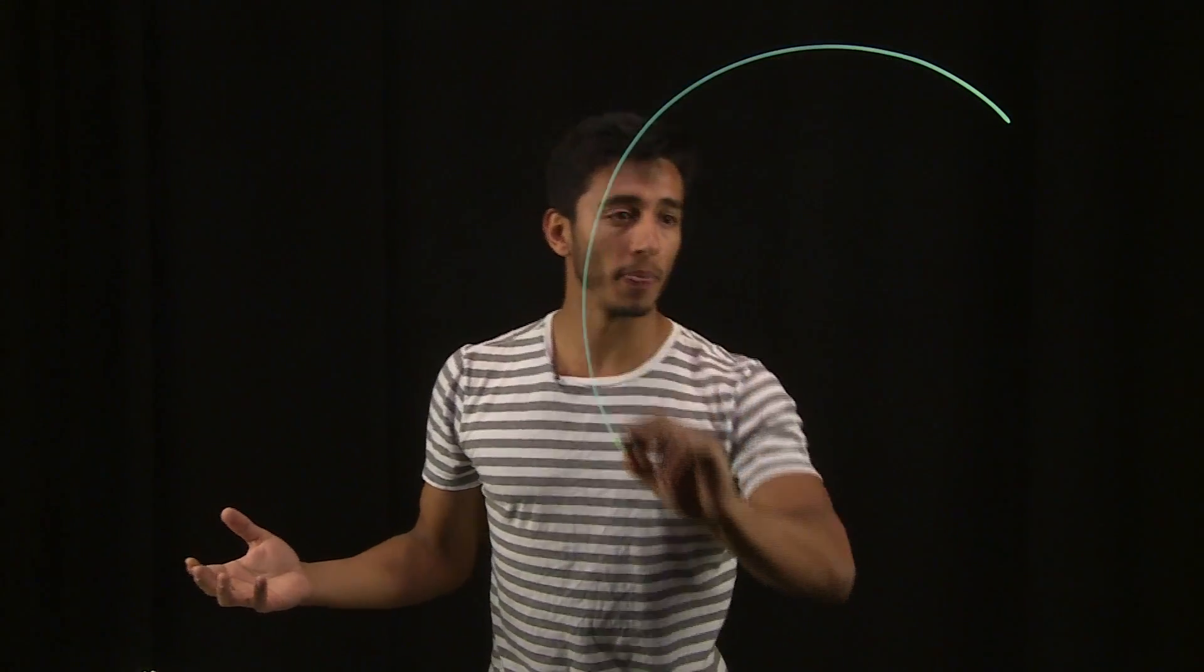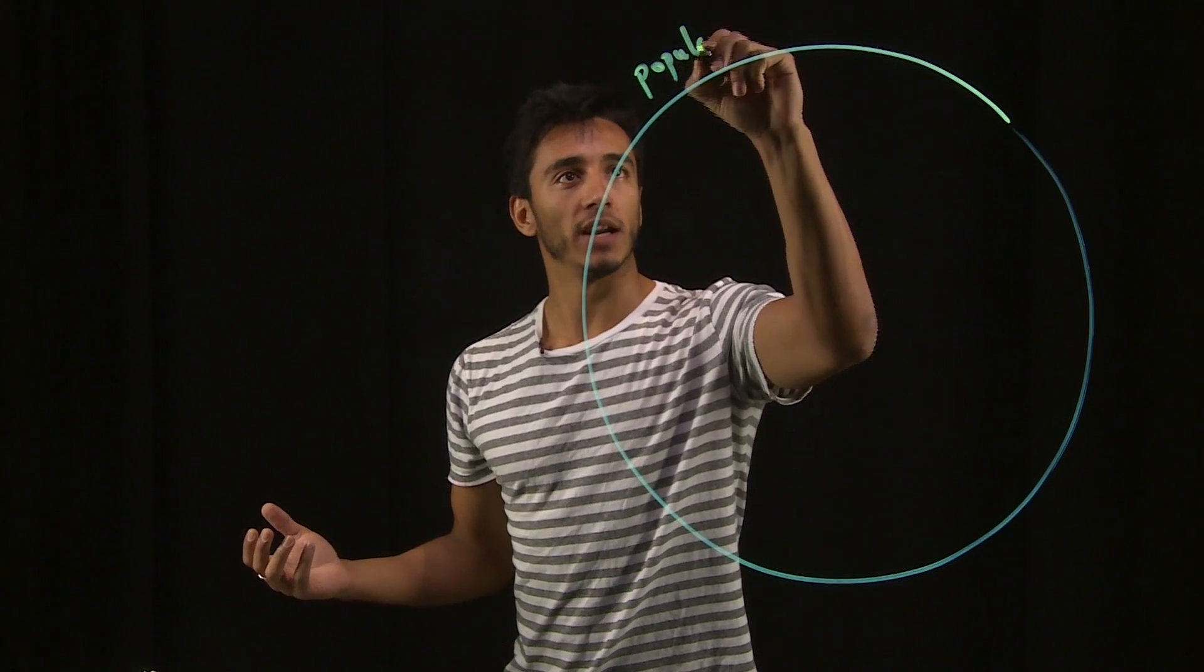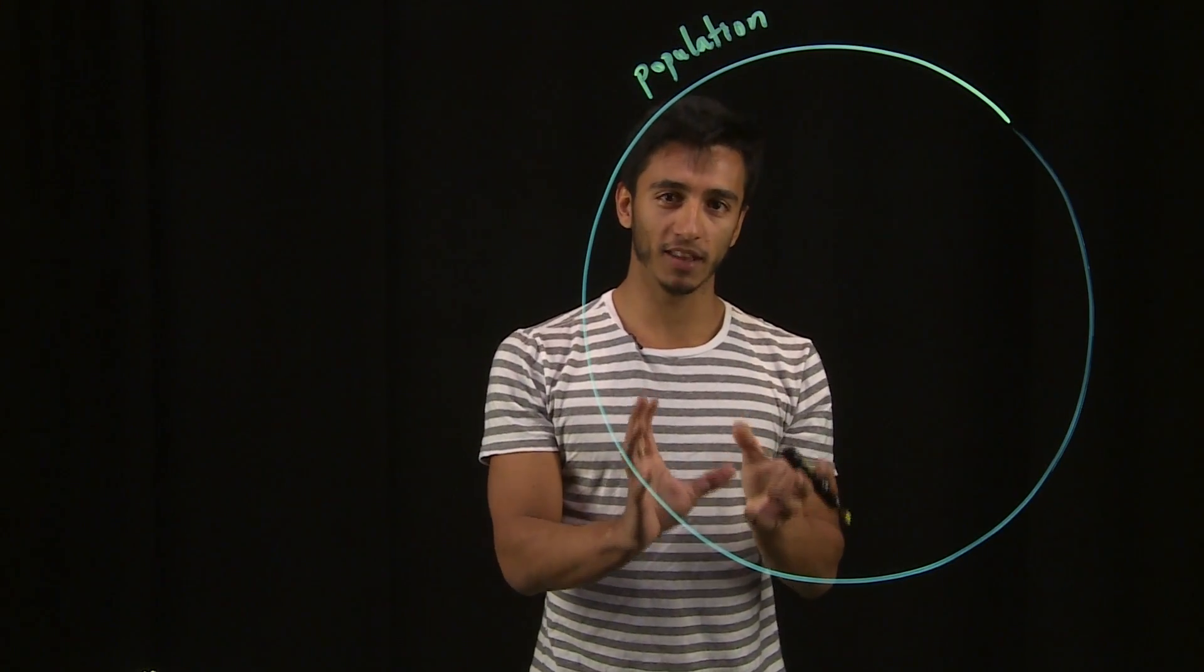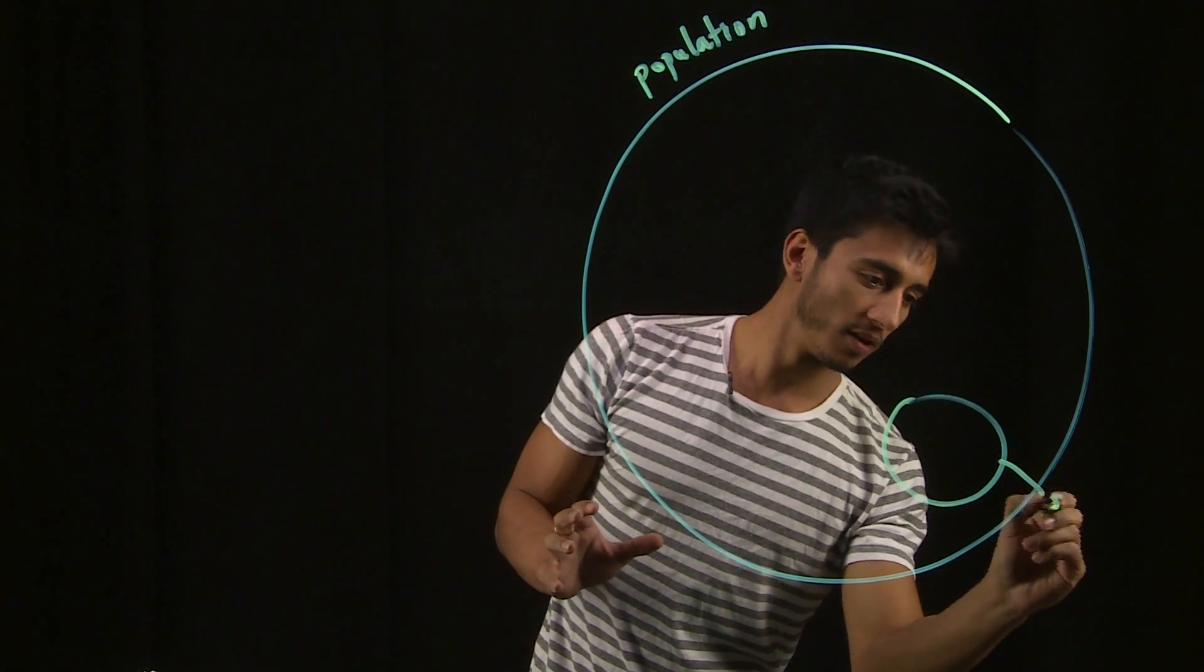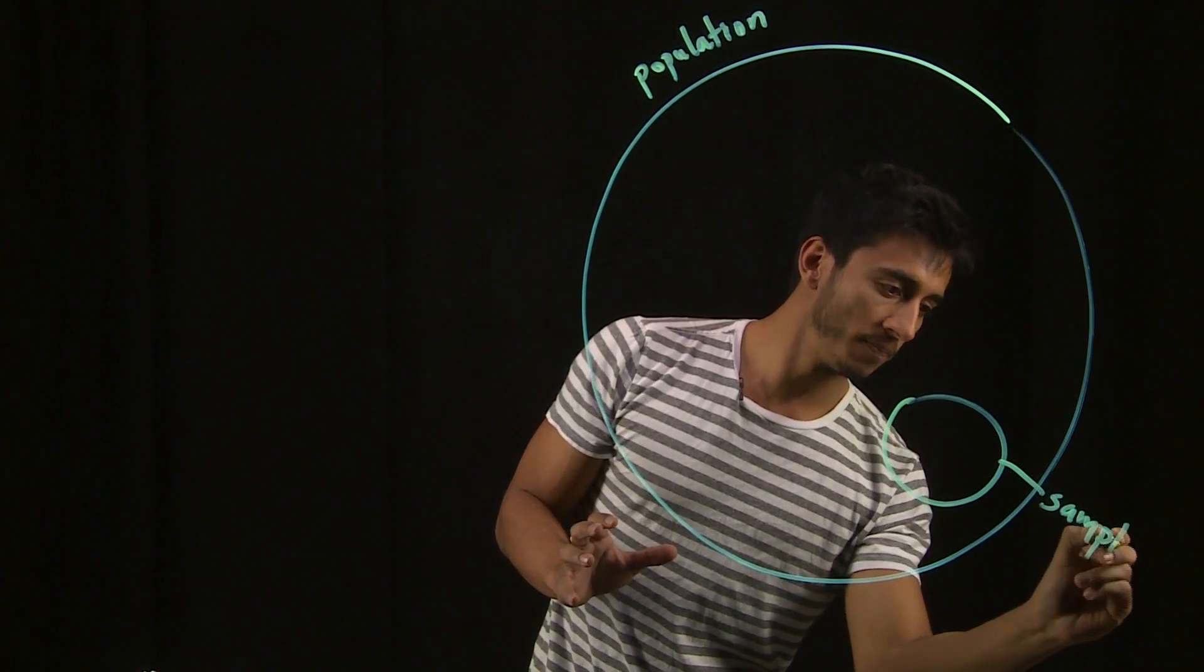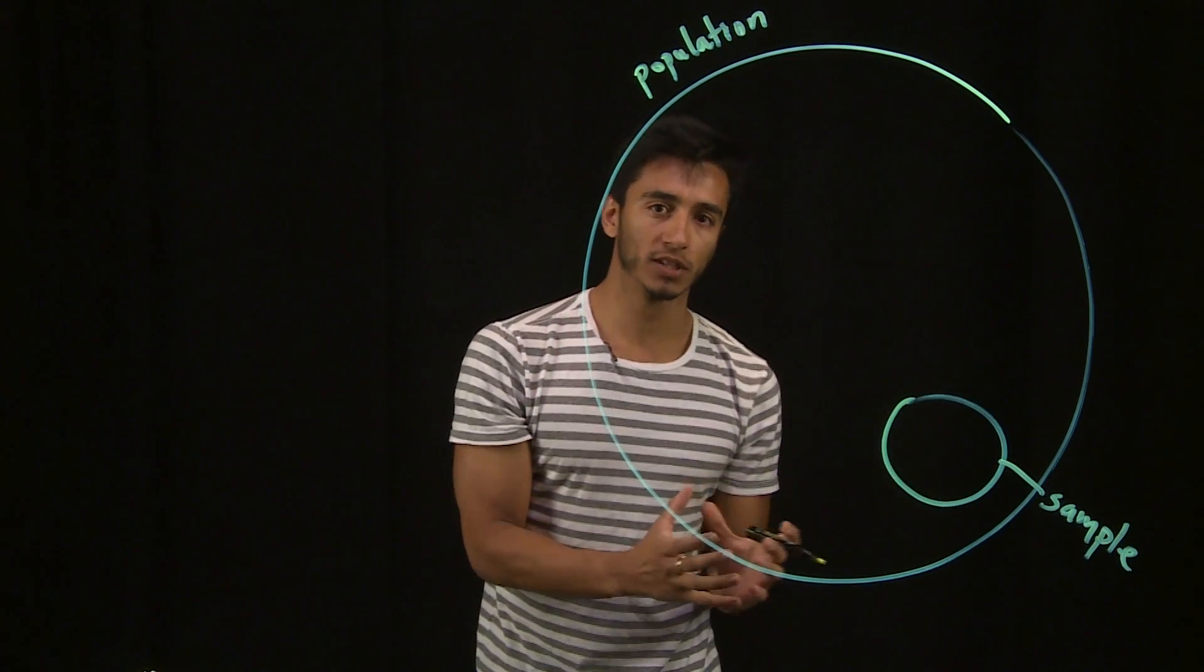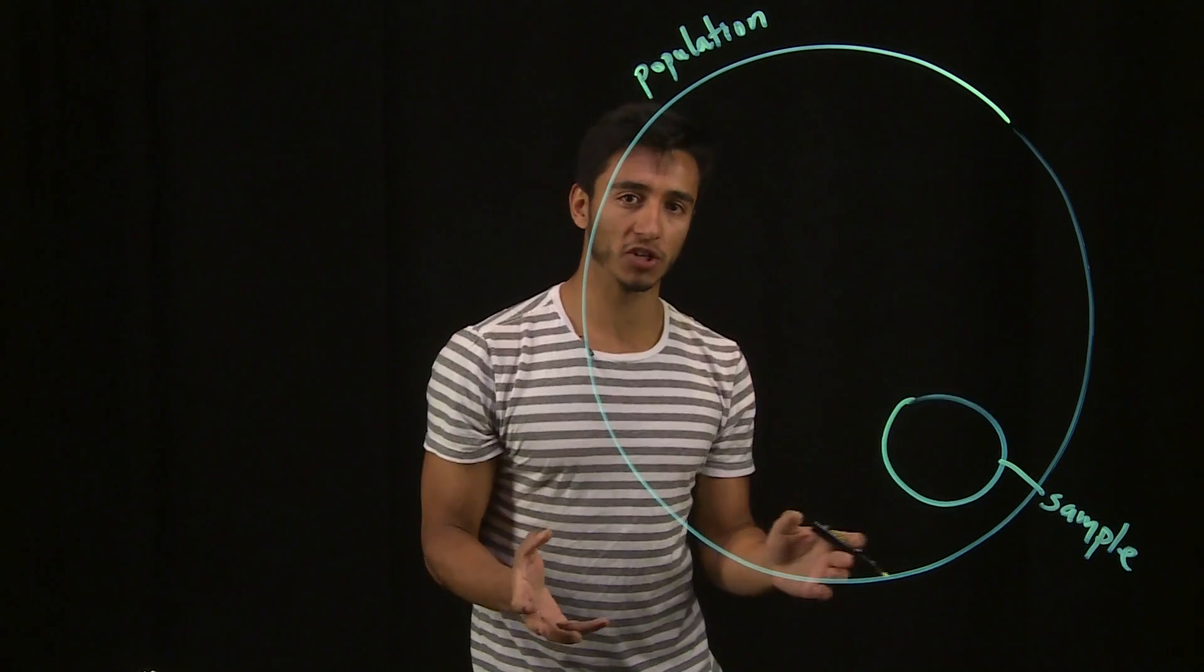So what we do is we utilize a sample. Just to graphically represent a population versus sample again, our population which is right here is the entire set of students in the U.S. And then the sample would be the subset of students that we would want to study to understand the rest of the population.